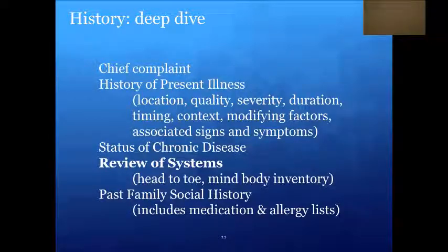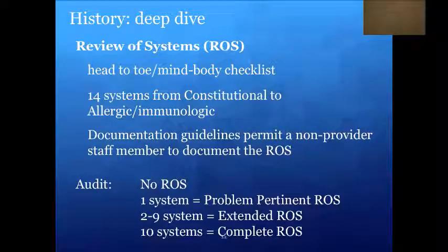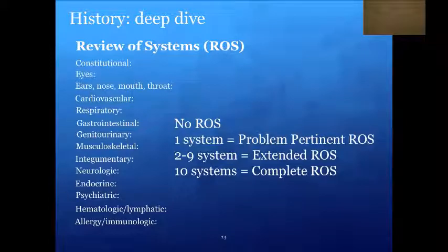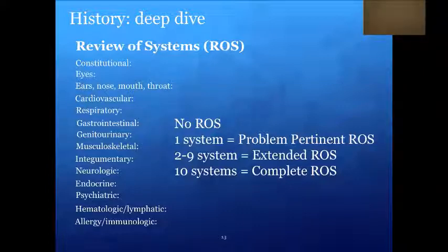Review of systems is a head-to-toe mind-body checklist with 14 systems. Documentation guidelines permit a non-provider staff member to ask and record the review of systems in the medical record. A problem-pertinent ROS is attained if one system is reviewed and documented; two to nine systems equal an extended review of systems; and 10 or more systems yield a complete review of systems.